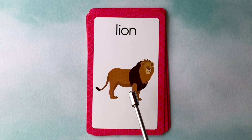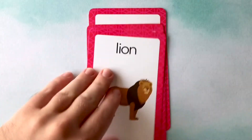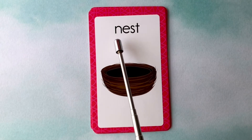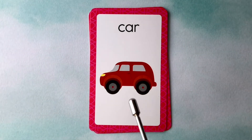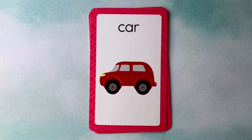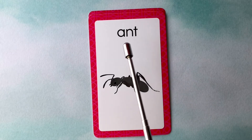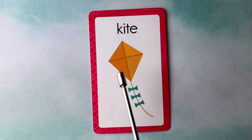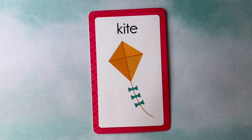This is a lion. L-I-O-N. Lion. This is a nest. N-E-S-T. Nest. This is a car. C-A-R. Car. This is an ant. A-N-T. Ant. This is a kite. K-I-T-E. Kite. Great job.